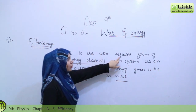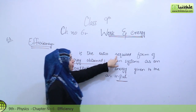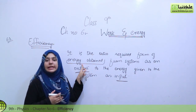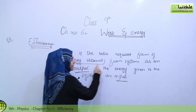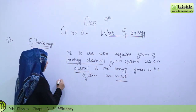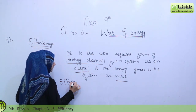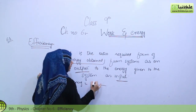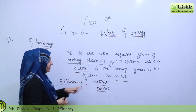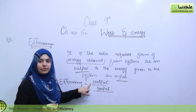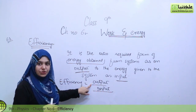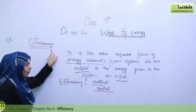So it is the ratio of the required form of energy — the energy obtained from the system as output to the energy given as input. The ratio is output over input — that means efficiency. The machines that perform good work have better output, and the result of output is better — it means the efficiency is better. So efficiency and output are directly related.